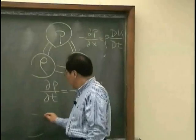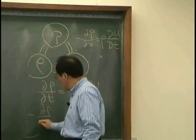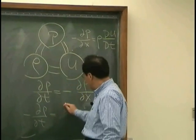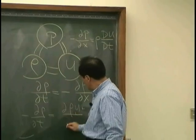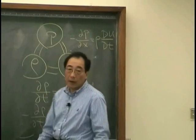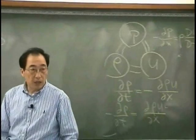Right? Or you could write, if you want, minus d rho dt is equal to d rho u dx. That is conservation of mass.